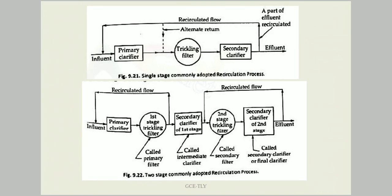You can see the single stage recirculation process flow diagram and the two-stage recirculation process. In a single stage process there is only one trickling filter, and recirculation is done after secondary clarification; the water is taken back to the primary clarifier. In the two-stage process, following the primary clarifier there is a first stage trickling filter followed by a secondary clarifier. The first recirculation is carried out immediately after the trickling filter back to the primary clarifier.